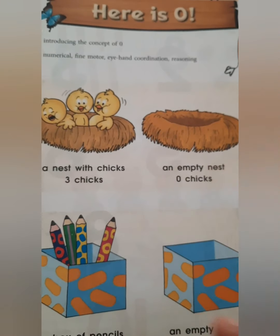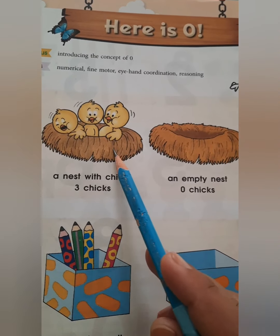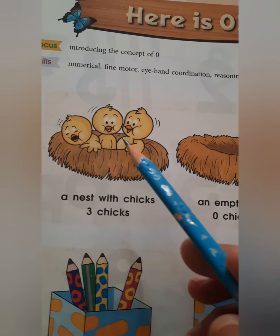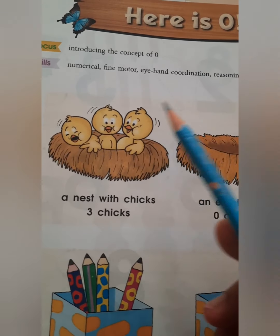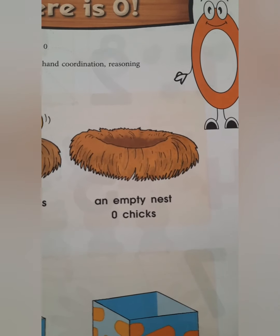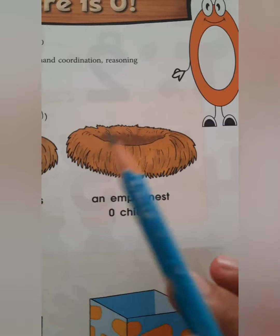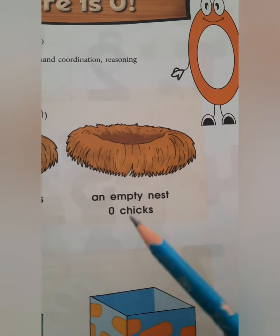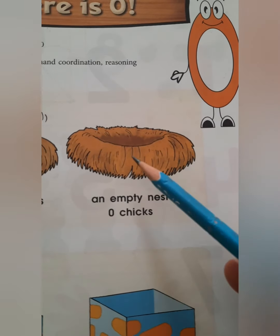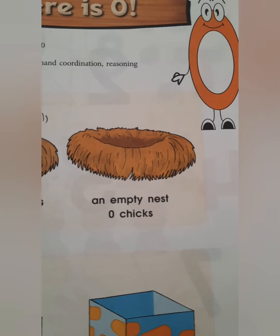Now look at these nests. Dekhen, yahan par do nests diye hue hain. A nest with three chicks. So these are babies of hen. Yahan par kitne chicks diye hue hain? One, two and three. So hum inko count kar sakte hain. Now look at the other one — this is an empty nest. Yeh empty nest hai, means khali hai, yahan par kuch bhi nahi hai. That means ki isme zero chicks hain. Yeh empty means khali hota hai. To jab yahan par koi bhi chicks nahi hain, to hum isko kaise bolenge? An empty nest — zero chicks.